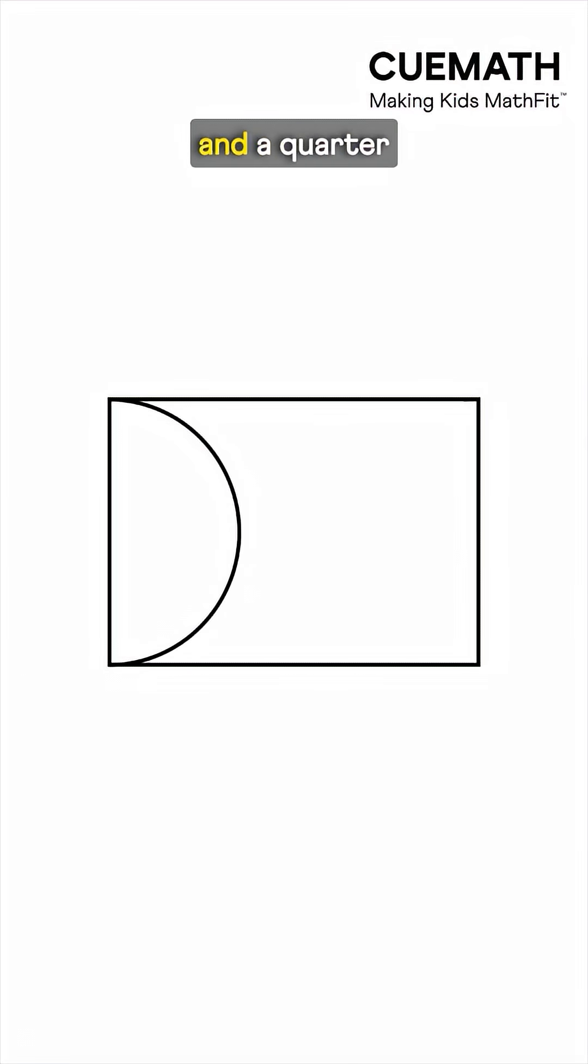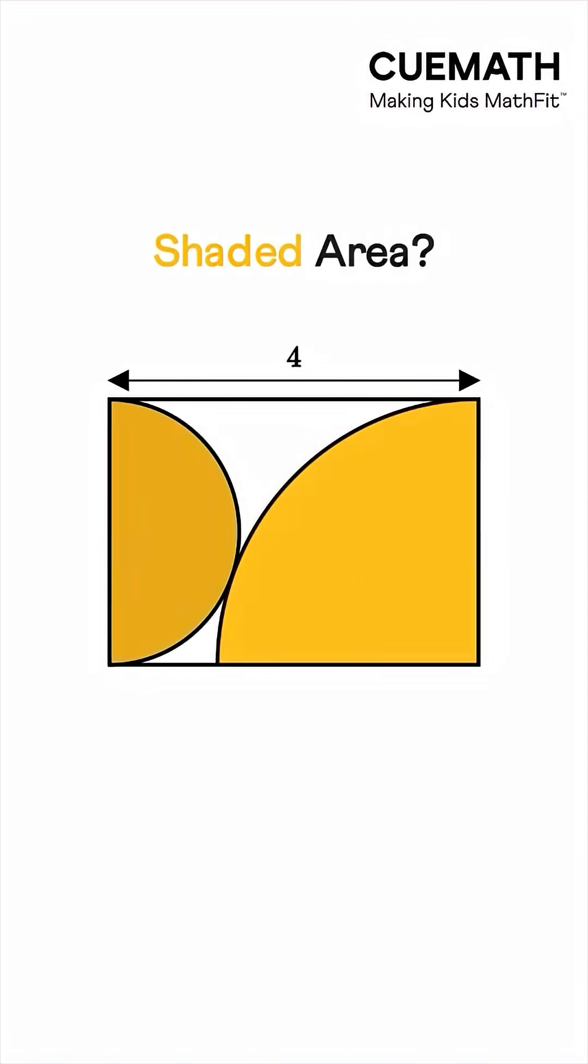A rectangle has a semicircle and a quarter circle inside it. If this length is 4, what's the shaded area? Let's see.